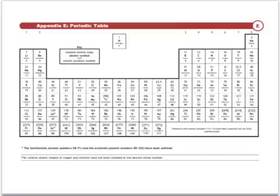The metals are here on the left-hand side. They tend to have only one or two outer electrons, whereas the non-metals on this side of the table tend to have almost full shells. Remember, a full shell has got eight electrons, so if it's got six or seven, it's nearly full, and in order to get a full shell, it would need to gain only a couple of electrons.